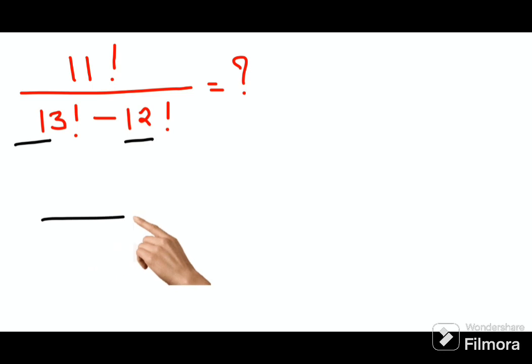So first we will write the smallest factorial as it is. And this 13 factorial can be written as 13 into 12 factorial minus 12 factorial.